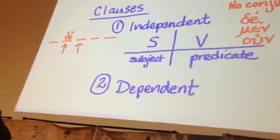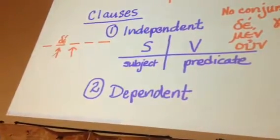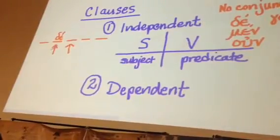Independent clauses tend to have post-positive conjunctions, or no conjunction at all.